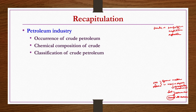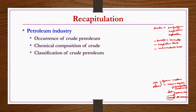We classified crude petroleum into paraffin base, naphthene base, and intermediate base — three categories. In the paraffin base, the majority of components are either normal paraffins or isoparaffins. In naphthene base crude, the majority of components are dominated by cyclics and aromatics. In the intermediate base, both paraffins and naphthenes may be present in large quantities.